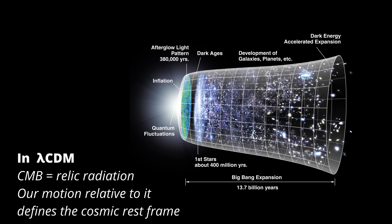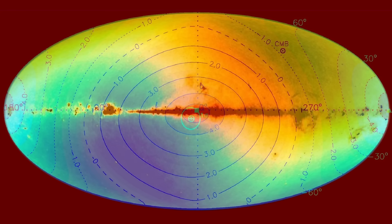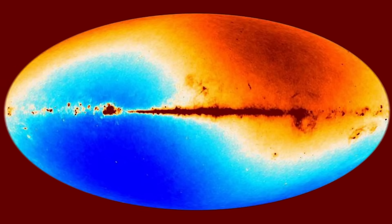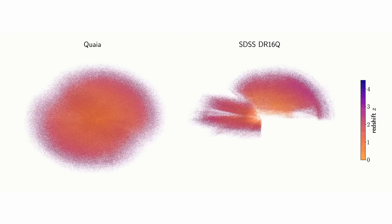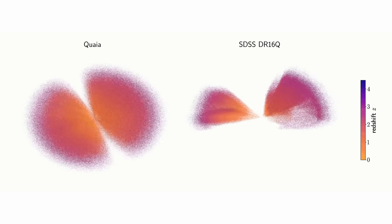On that basis, it defines the cosmic rest frame. So when quasar dipoles point in a completely different direction, the mainstream view is simple. The quasar result must be wrong. It has to be some kind of systematic error in the catalogue, perhaps an uncorrected bias in the data or a hidden selection effect.